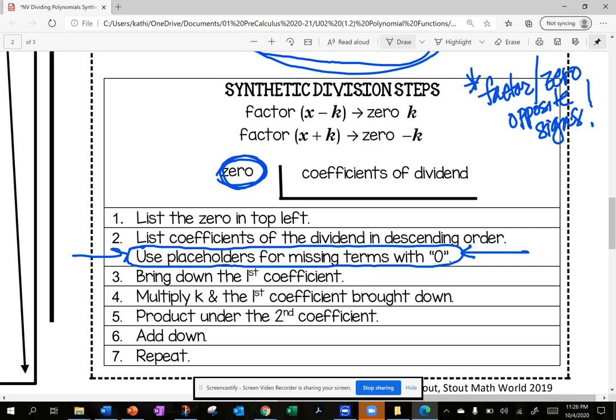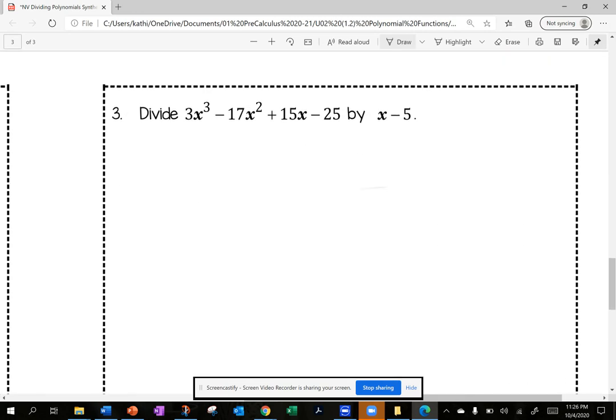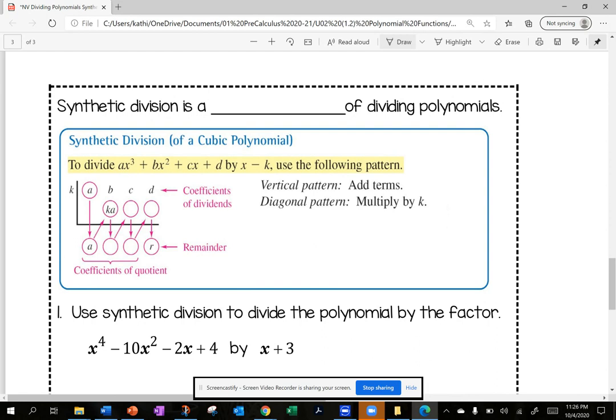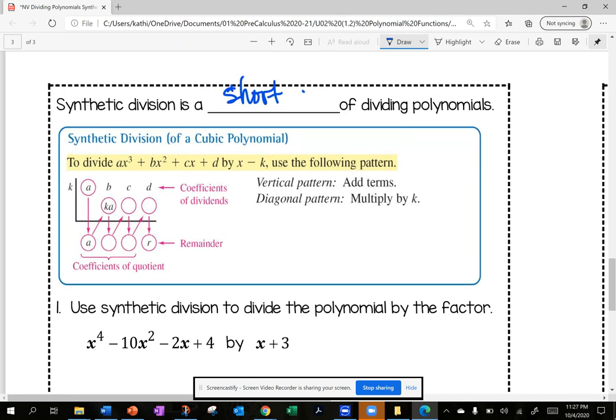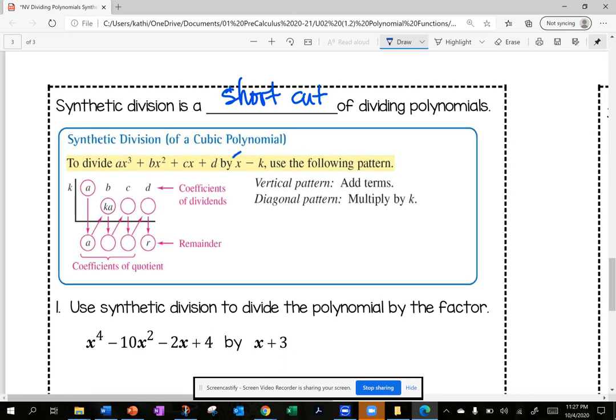Let's do an example. Synthetic division is a shortcut for dividing polynomials. On the previous page, I described in words what we're doing, and this is a chart with some examples. I have a vertical and a diagonal pattern. I'm going to point out in this example, this is the factor. When using synthetic division, I list the zero over here. So I need to know if I have the zero or the factor.